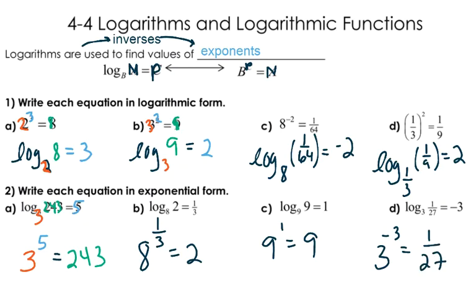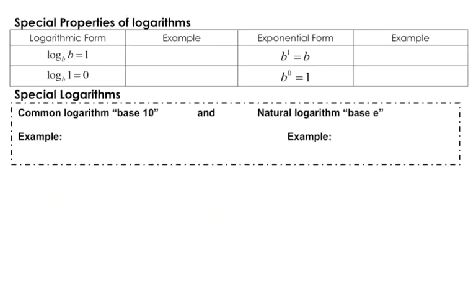We're going to take a look at some special properties of logarithms. In this first form, you will see log base b of b, so the base and the number right here are the same. Here's an example with numbers: log base 3 of 3. If those numbers are the same, it's always going to simplify to 1. Here's the reason why: if I change it to exponential form, I'll start with my base of 3. 3 to the 1st power is equal to 3.